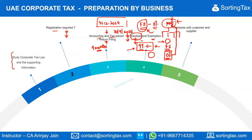An important consideration is reviewing contracts with customers and suppliers. Many existing contracts may not contain clauses relating to who bears the tax burden, since there was previously no applicable tax. Now that UAE corporate tax applies, the cost of doing business may increase, requiring review of whether prices need revision. Under current law the withholding tax on any payment is 0%, but this rate may change in future, so new contracts should include provisions specifying who bears any withholding tax on non-resident suppliers or customers.